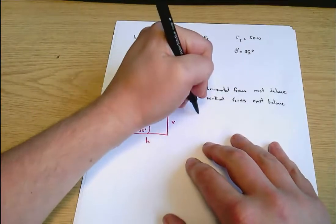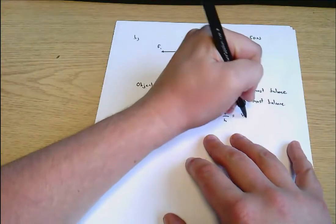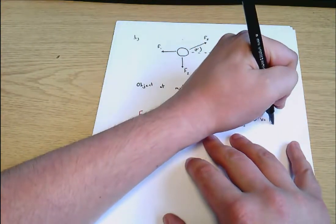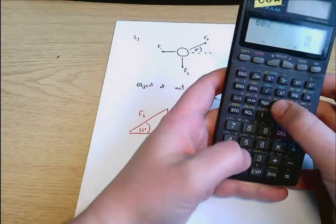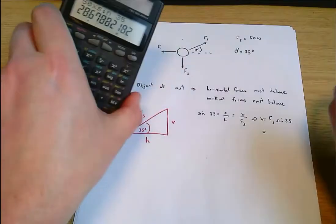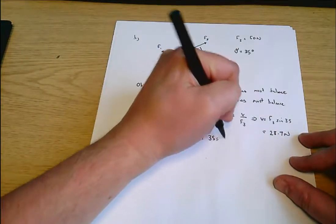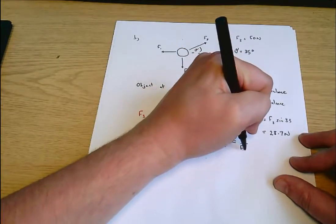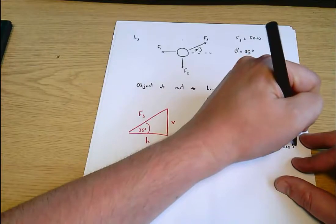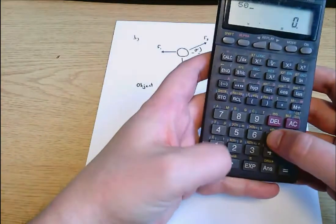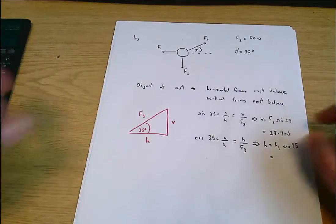It's going to be easiest if I convert F3 into horizontal and vertical components. Let's just draw out the triangle for that. This is vertical, this is horizontal, this is F3 and this is 35 degrees. F3 equals 50 newtons. We can say sine 35 equals opposite over hypotenuse, which here equals V over F3. So V equals F3 times sine 35, which is 50 times sine 35, equals 28.7 newtons. And cos 35 equals adjacent over hypotenuse, which equals H over F3 here. Therefore H equals F3 cos 35, which is 40.95, so that's 41.0 to three significant figures.